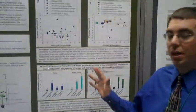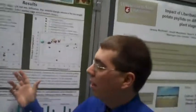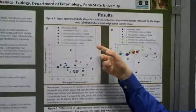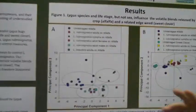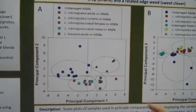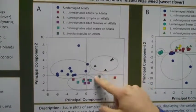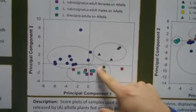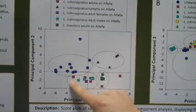What PCA showed me is that on a single host plant, in this case alfalfa, different insect species had differences in the volatile blends. All of the Lygus lineolaris adults on alfalfa clustered together, separate from Lygus rubrosignatus adults, which indicates variation between the two species at the adult level.